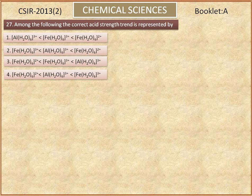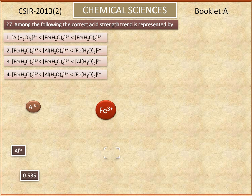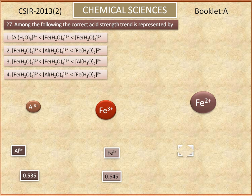Now we see the ionic radius of central metal cations of the given complexes. Aluminum 3+ ionic radius is 0.535 angstroms. Ferric ionic radius is 0.645. Ferrous ionic radius is 0.78.